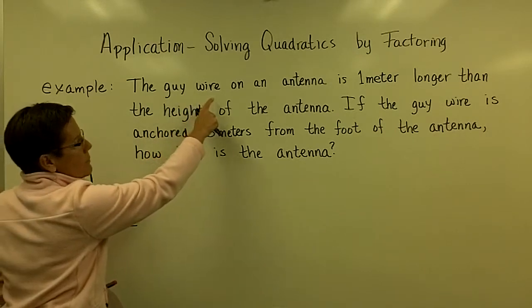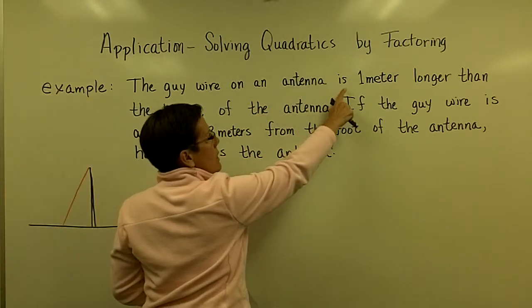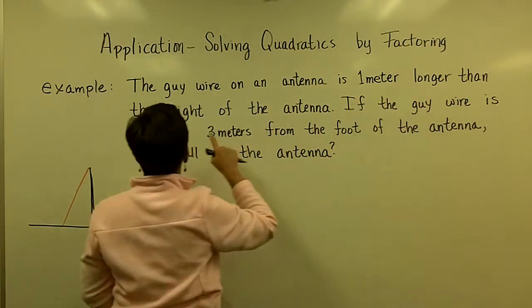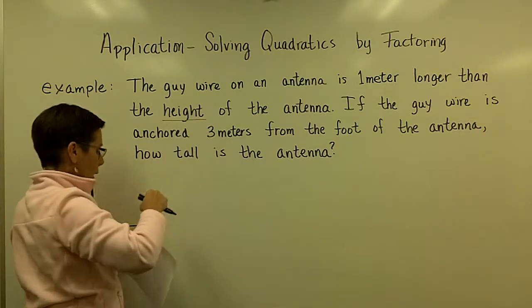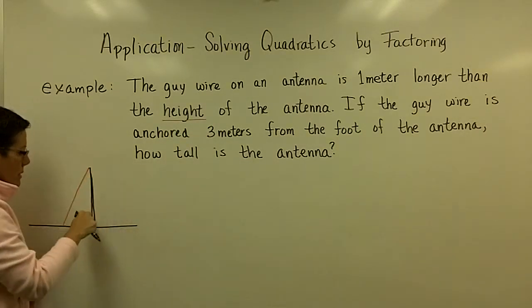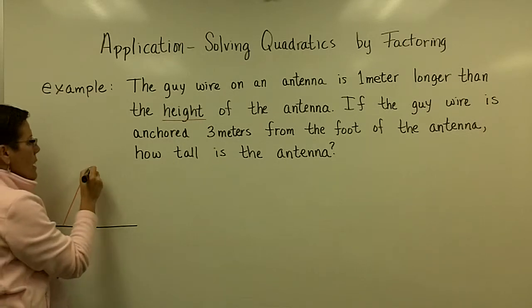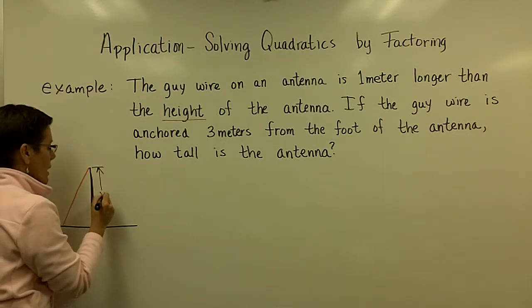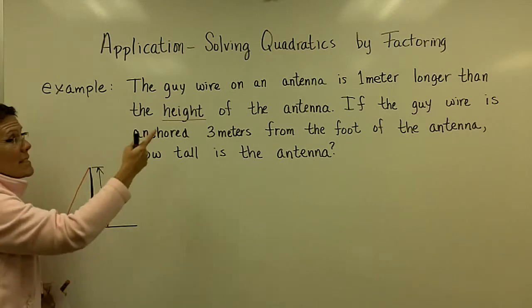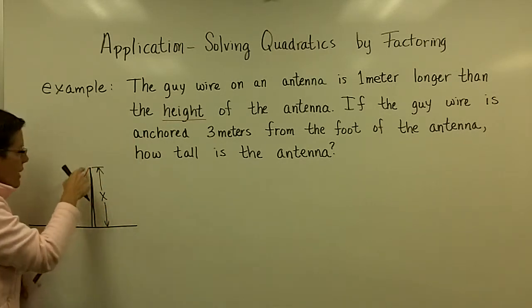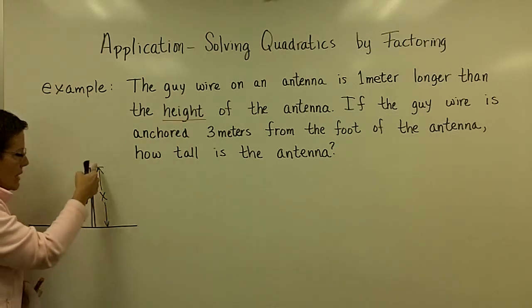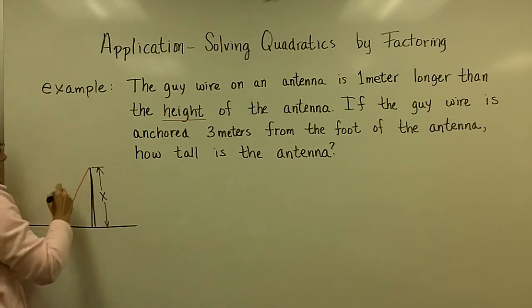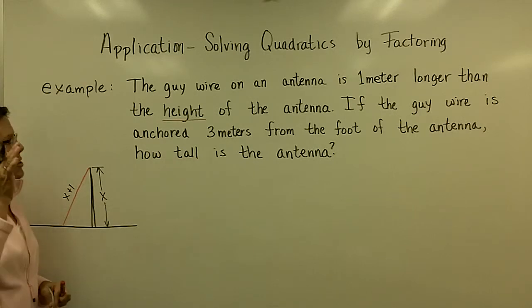This guy wire attached to the top of the antenna is one meter longer than the height of the antenna. So remember, I'm comparing the guy wire to the height of the antenna. This is my antenna. Then I'm going to let the height be my letter X, because I want to write an expression for the length of this that is one meter longer than that. So again, here's my height. One meter longer than that would be X plus one, right, for the length of the red line.